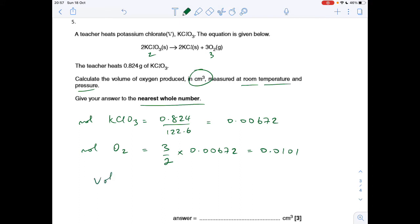The volume at RTP is going to be the moles, 0.0101 times 24,000 again because we need it in cm cubed. To the nearest whole number, that comes out at 242.